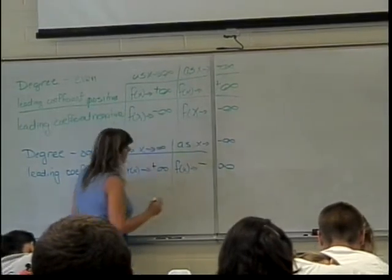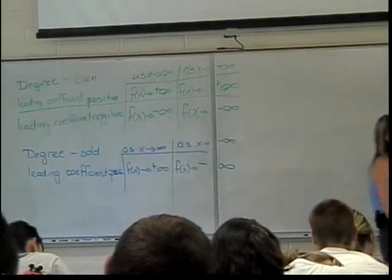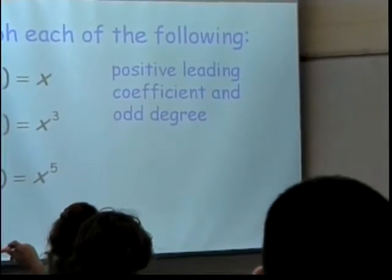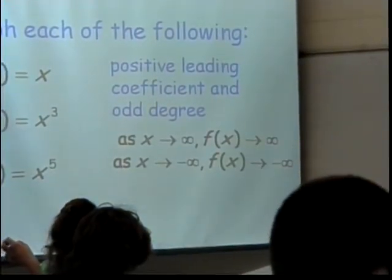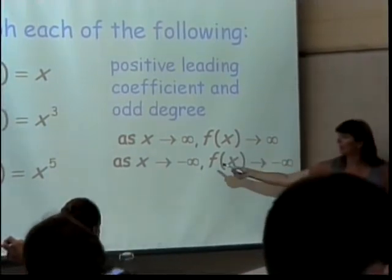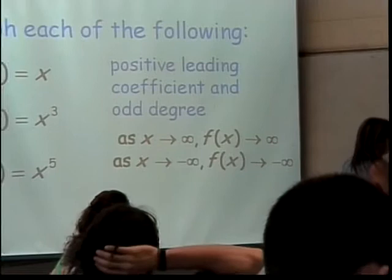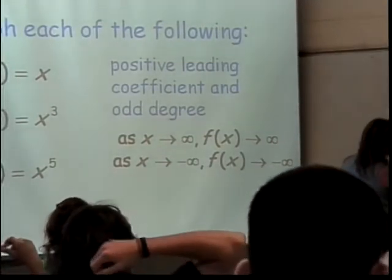I read infinity so funny. So that's what this says. If I have a positive leading coefficient and an odd degree, as x approaches infinity, f of x approaches infinity. And as x approaches negative infinity, f of x approaches negative infinity.